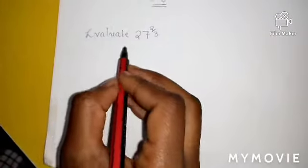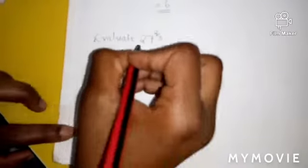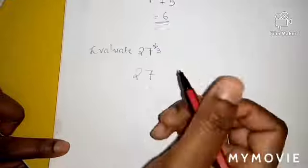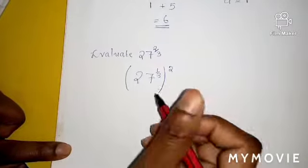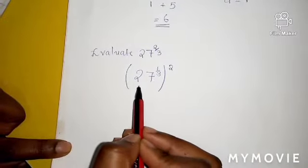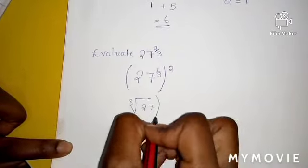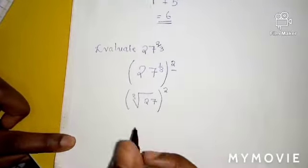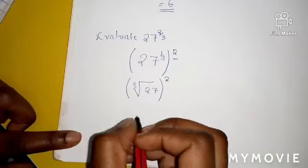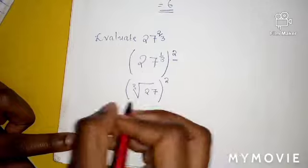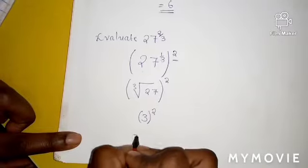Next, we're going to evaluate 27 to the power 2 over 3. We express this as 27 to the power 1 over 3, in brackets, all to the power 2. This means we need to find the cube root of 27. Everything must be raised to the power 2. We look for a number that multiplies itself 3 times to give 27 — that gives us 3. So the cube root of 27 is 3. Therefore, 3 raised to the power 2 gives us 9.